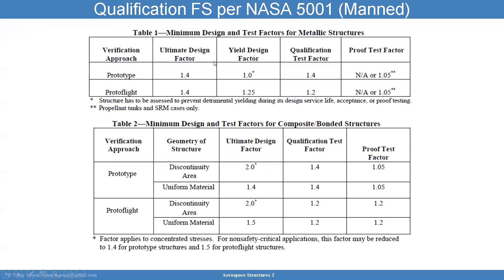Qualification factors of safety for NASA are driven by 5001. Factors of 1.4 are used for unmanned vehicles. A yield factor of 1.0 is used to ensure no detrimental yielding — meaning no plasticity that would impact functional performance, cause excessive deformations, or initiate fatigue. The qualification test factor is 1.4 for testing, and a different factor goes into analysis. The proof test factor is 1.05 per NASA requirements.